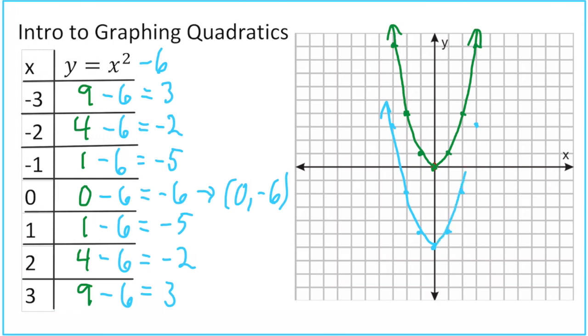It's basically the same parabola. So what did that negative 6 do? It took our entire graph and moved it down 6 spaces.